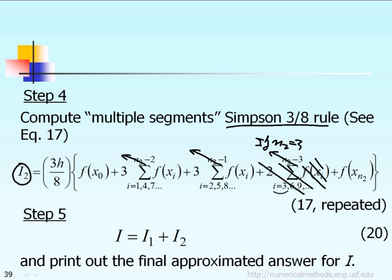from i equals 3 to 0. If n2 equals 3, then n2 minus 3 equals 0, and you cannot go from i equals 3 to 0 with an increment of 3. This simply means for single segment Simpson 3/8 rule (n2 = 3), this term is not in the formula.